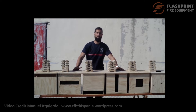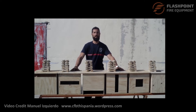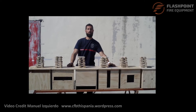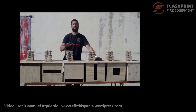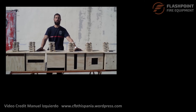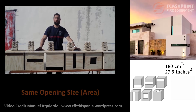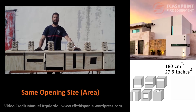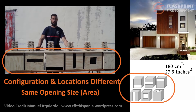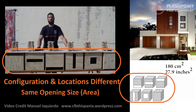This video is an English translation of work done by Manuel Esquiebro approximating the heat release rates encountered with differently sized and oriented ventilation openings. We are going to burn the same size of fuel packages in each of the single cell boxes. Each box has an opening that measures 180 centimeters square, or 27.9 square inches, but the configuration and location of the opening differs from box to box for comparison.